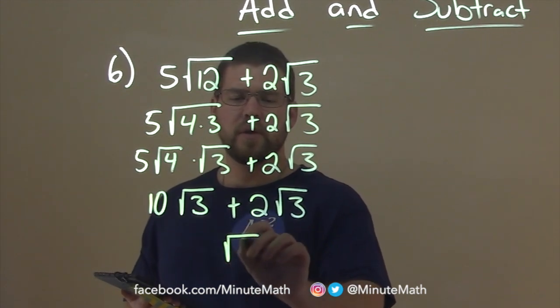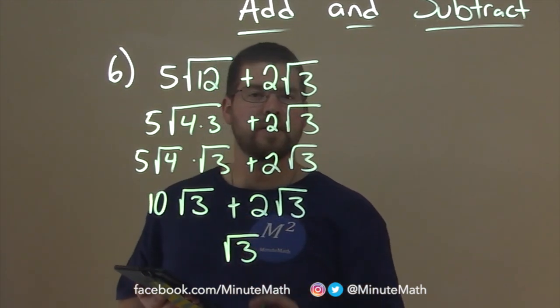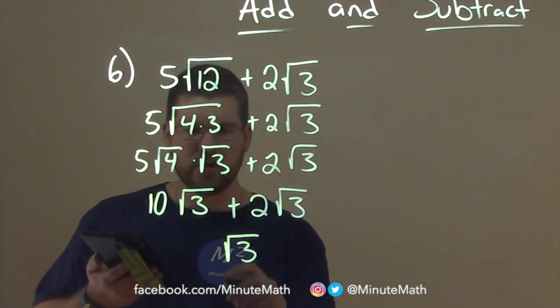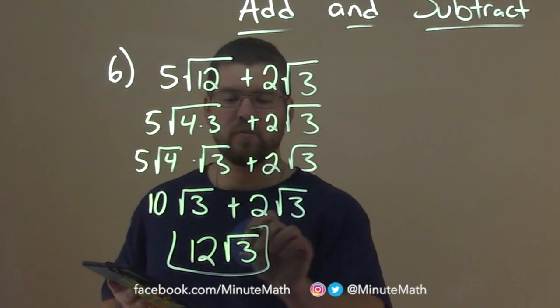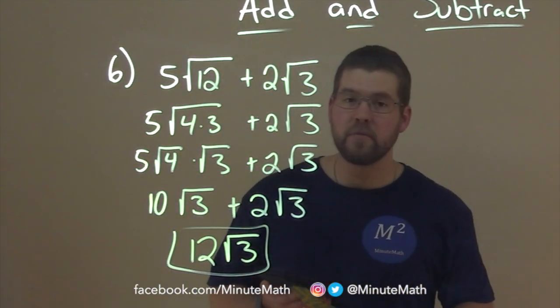So the square root of 3 just stays here, and we add the 10 and the 2, and that becomes a good old 12. And so our answer here is just 12 times the square root of 3.